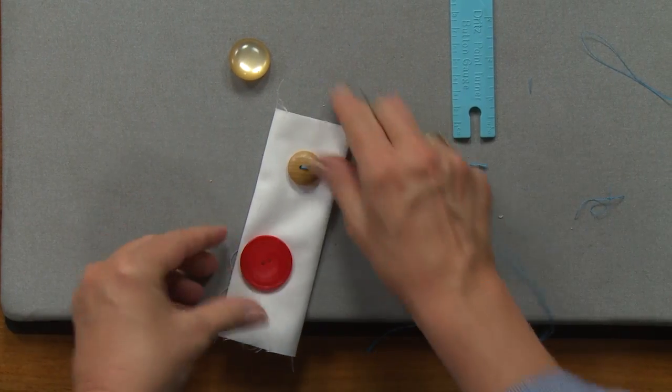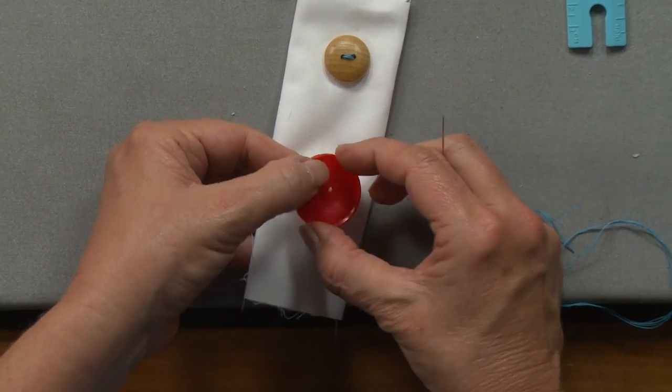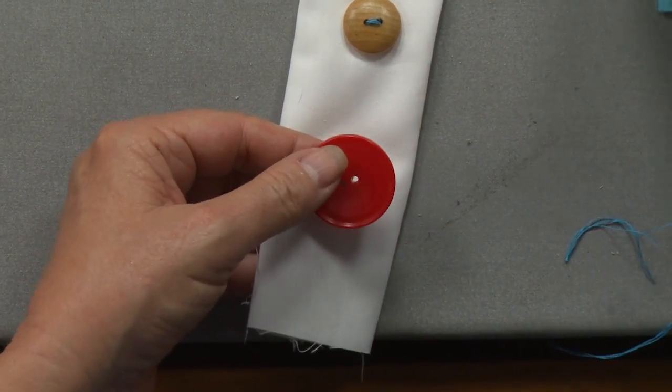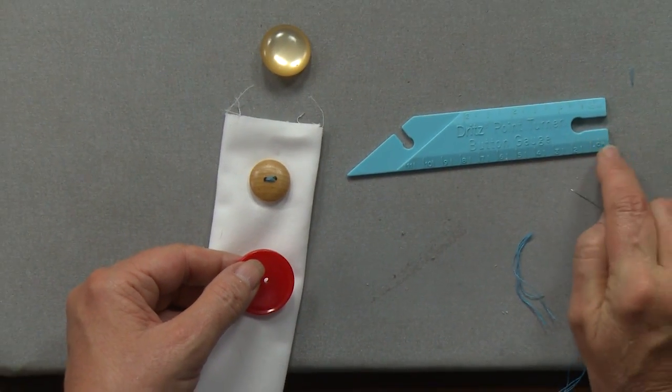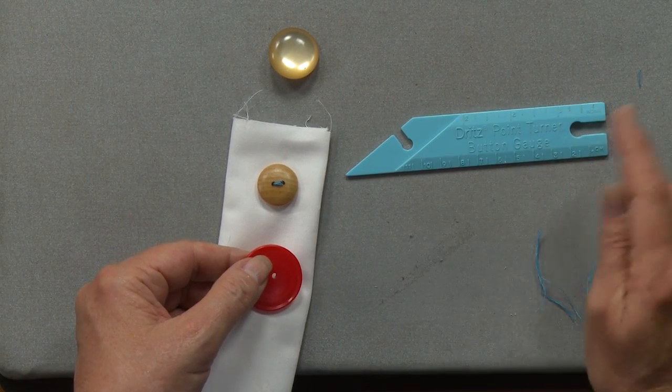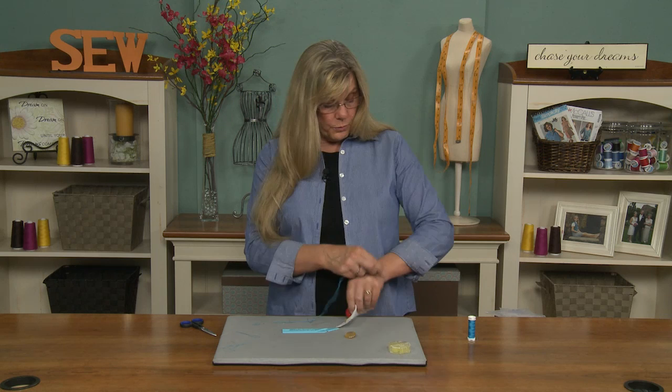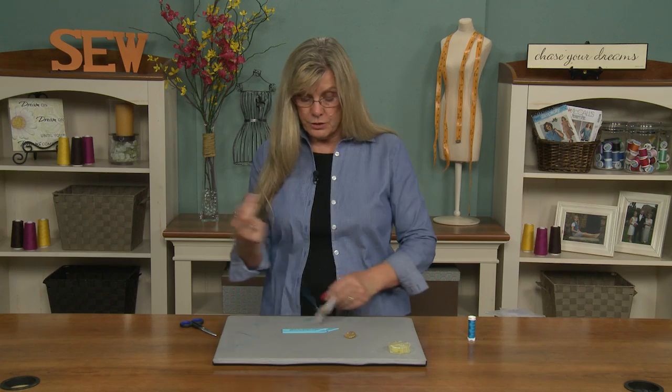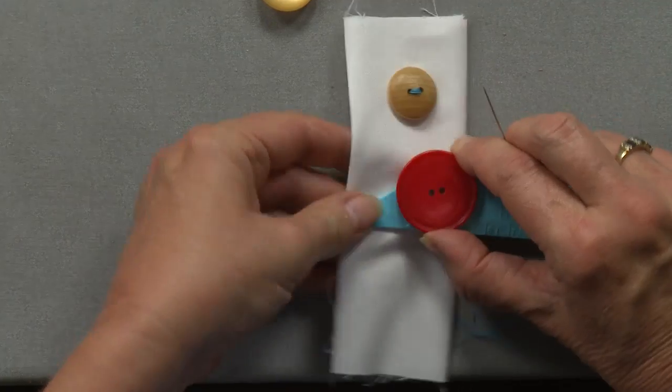Now the trick with a shank button is you need to raise it up from the fabric. You can either hold it loosely and adjust your thread, or you can use this neat little tool. It's called the Dritz Point Turner and Button Gauge. It's got a little ruler in centimeters and inches so you can measure your buttons. You can use this for turning your collars or cuffs where you need to make a nice sharp point.